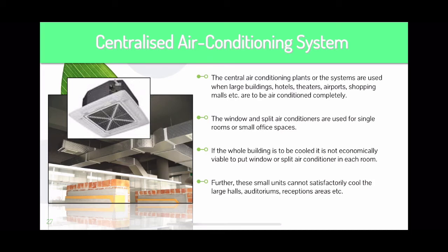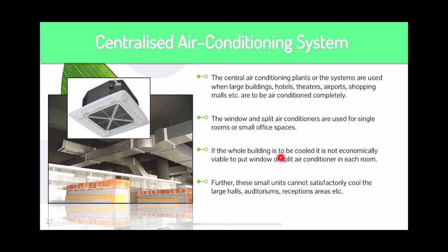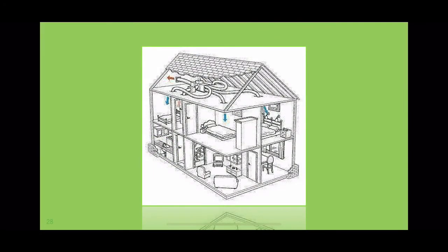A centralized air conditioning system is very popular — it is installed in Taylor's University in our lecture rooms and tutorial rooms. Central air conditioning plants or systems are used when large buildings, hotels, theaters, airports, and shopping malls need to be air conditioned completely, with the same temperature throughout the whole floor. Window and split air conditioners are used for single rooms or small office spaces, but a central air conditioning system is needed in huge places. If the whole building needs to be cooled, it is not economical to use split units — you must use one centralized unit.